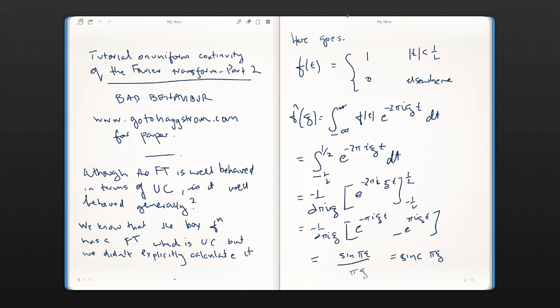This is part 2 of the tutorial on Uniform Continuity of the Fourier Transform. It's about bad behavior of functions, and there is a detailed paper on the website which covers this and which you can look at at your leisure.